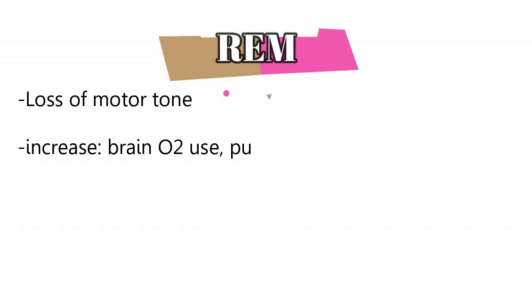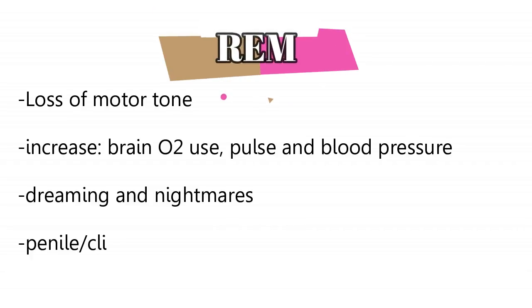In REM sleep, it's very important to know these characteristics: there is loss of motor tone in the body, an increase in brain oxygen consumption, and an increase in pulse and blood pressure. Dreams and nightmares both occur in REM sleep. It's important to note the difference between nightmares and sleep terrors — they are completely different things. Finally, penile and clitoral erections also occur in this stage.